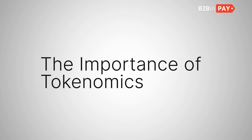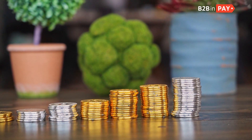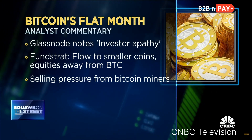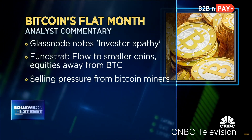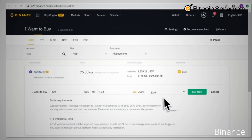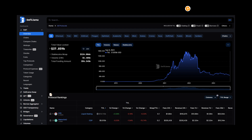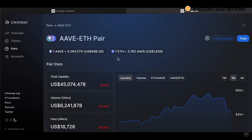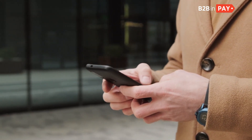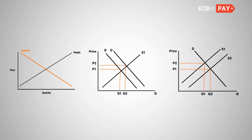Why is tokenomics important when investing in cryptocurrency? Understanding the factors that will affect supply or demand is vital for all investors, without exception. Most important is understanding how digital currency will be used. Is there a clear link between the asset and the use of the platform or service being created? If so, there is a strong possibility that a growing service will push up the demand to buy and use the token, which will ultimately drive up its price. Tokenomics helps us to understand how much an asset might be worth in the future.